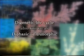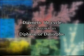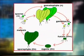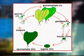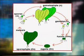The second category of life cycles in algae is digenetic or diphasic or dimorphic type. This type of life cycle involves two alternating morphologically and cytologically distinct individuals of sporophytic and gametophytic generations with diploid and haploid chromosome complements respectively.